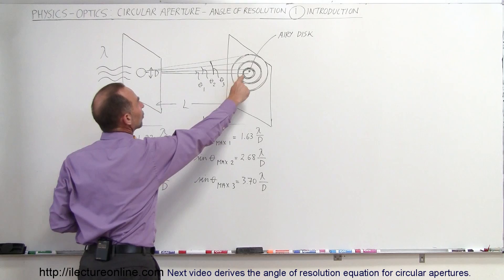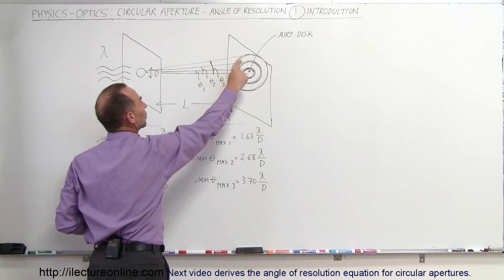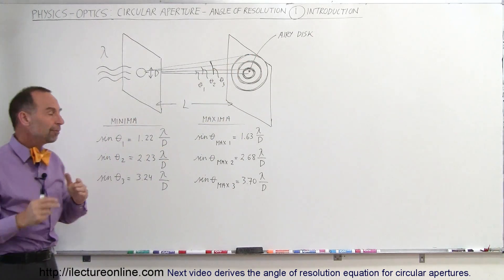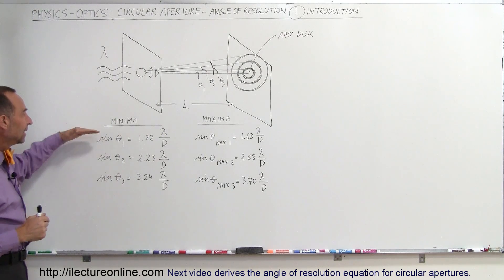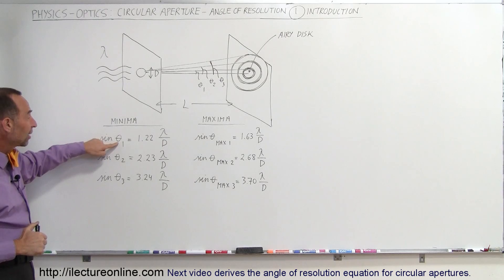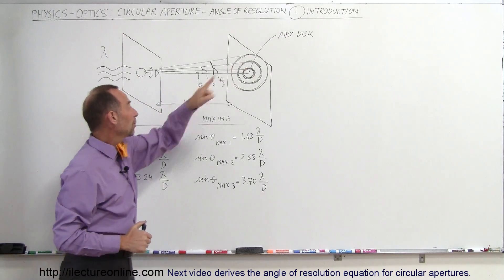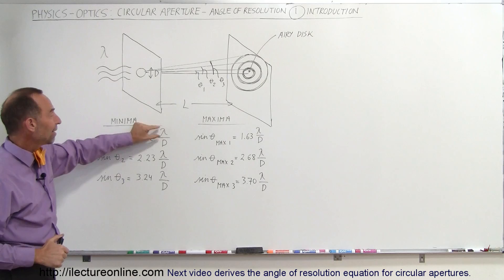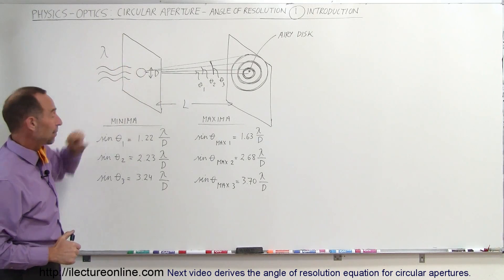the angle theta 1 to the first minimum, theta 2 to the second minimum, theta 3 to the third minimum, and so forth. From that, we can actually find the angles with this relationship. We know that the sine of the first angle to the first minimum right there is equal to 1.22 times the wavelength divided by the diameter of the aperture.